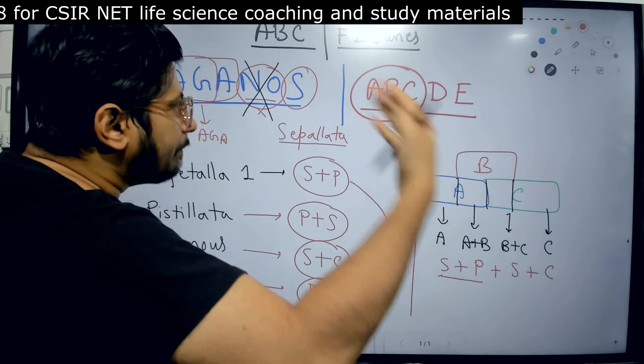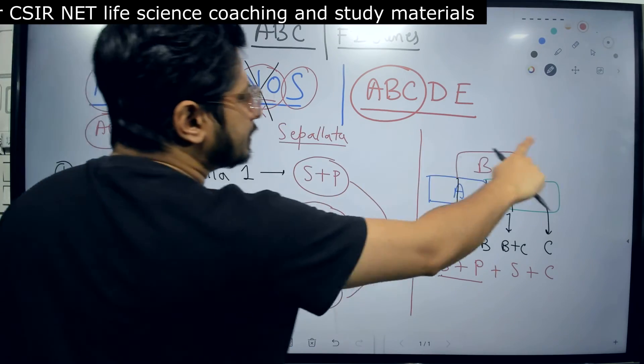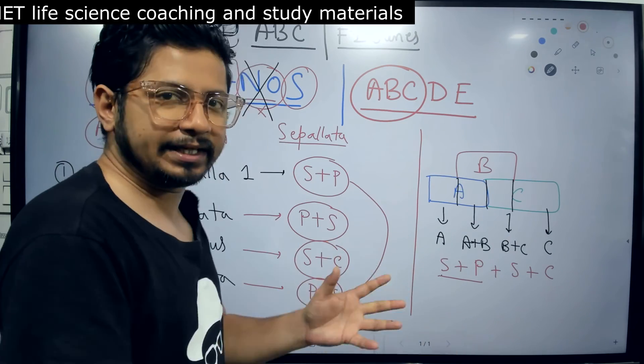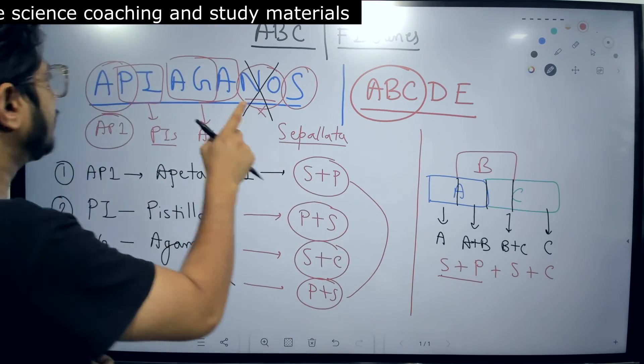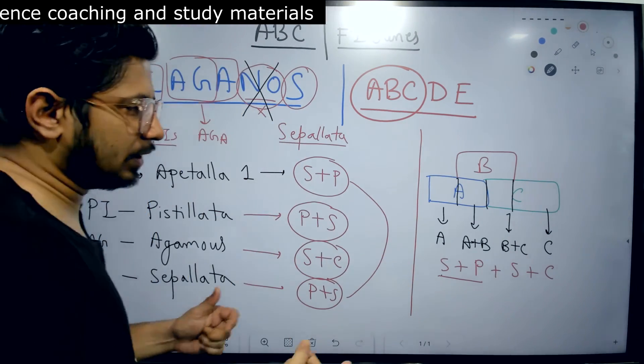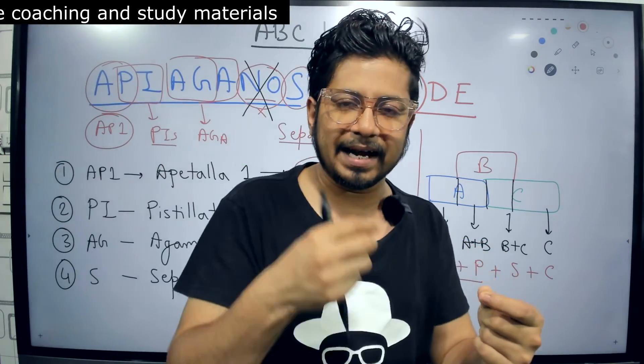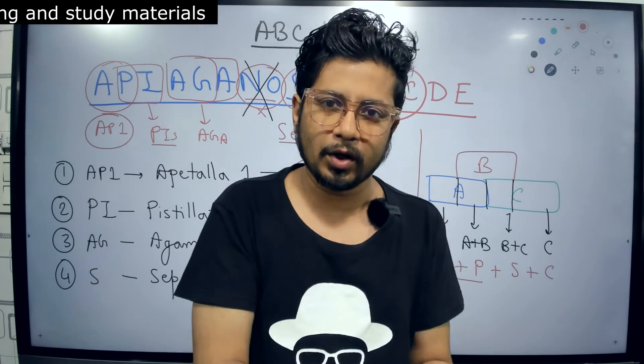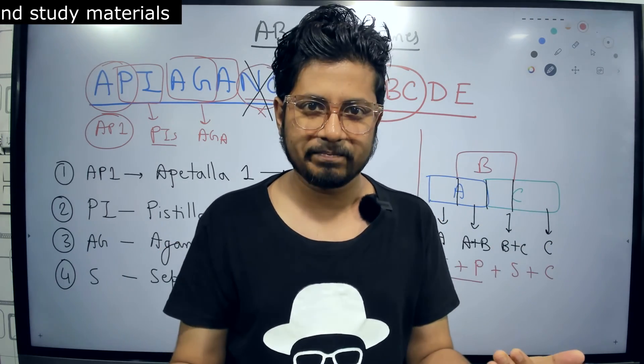Not only the ABC model of flowering and the whorls that this ABC category of genes are responsible for, but also the different genes that are responsible to assign the identity of sepal, petal, stamen, or carpel to a particular whorl of the flower while it's developing. That's how easy it is.